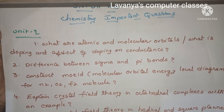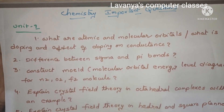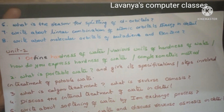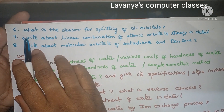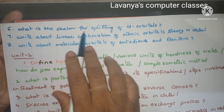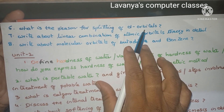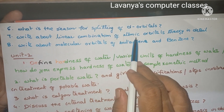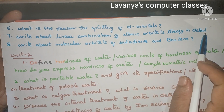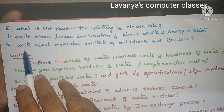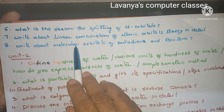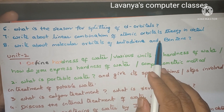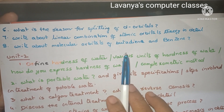These are some important questions in Unit 1. Next important questions in Unit 1: what is the reason for splitting of d orbitals? Next question is: write about the linear combination of atomic orbitals (LCAO) theory in detail. Last question is: write about molecular orbitals of butadiene and benzene. These are the important questions in Unit 1.